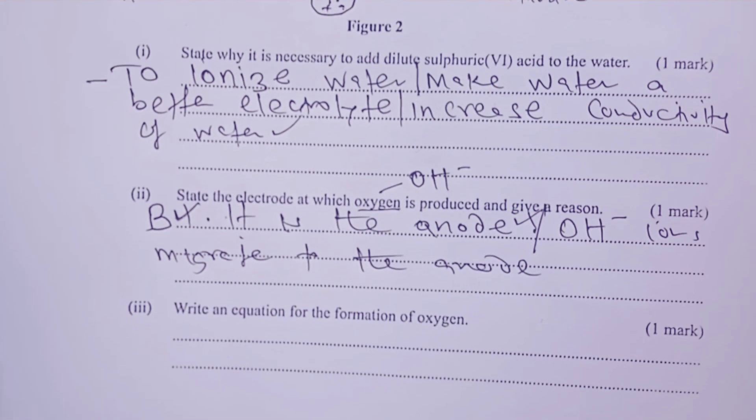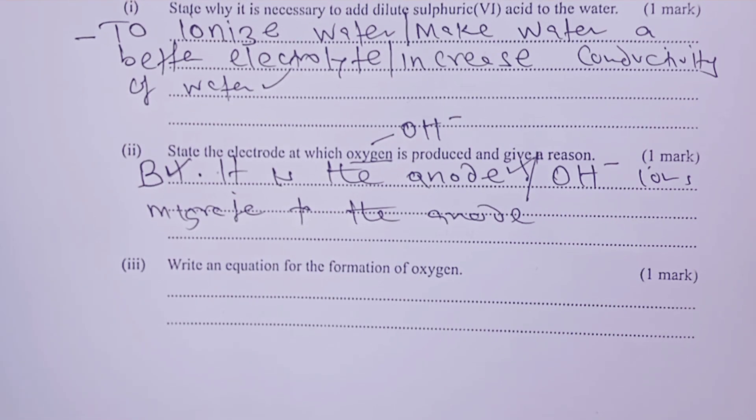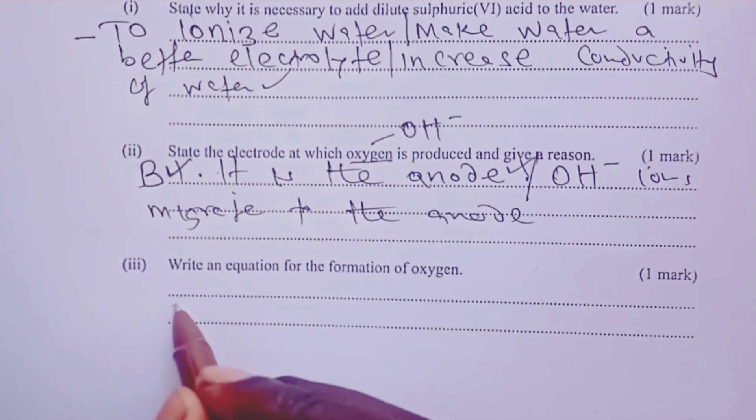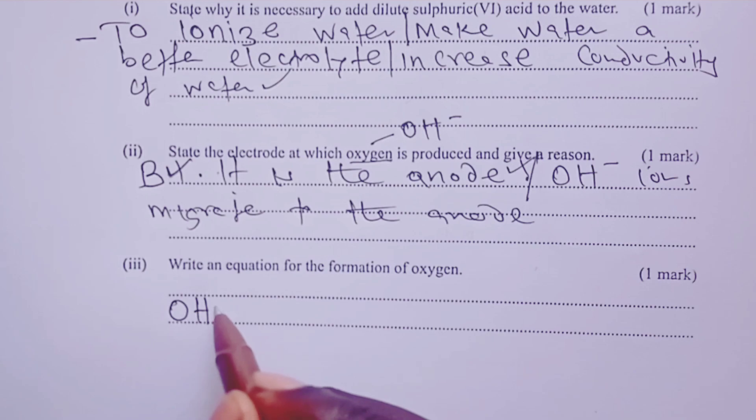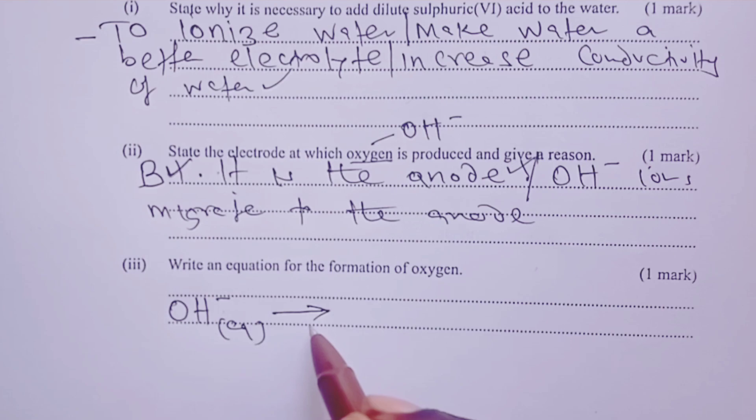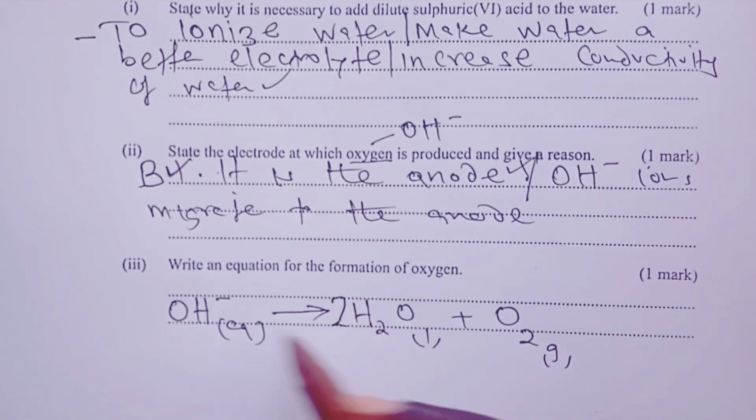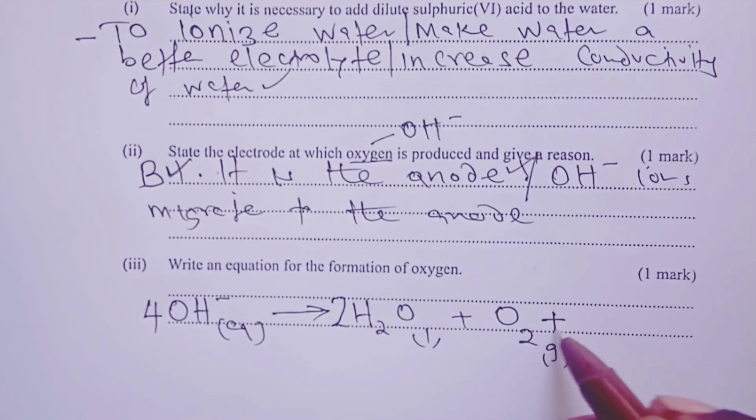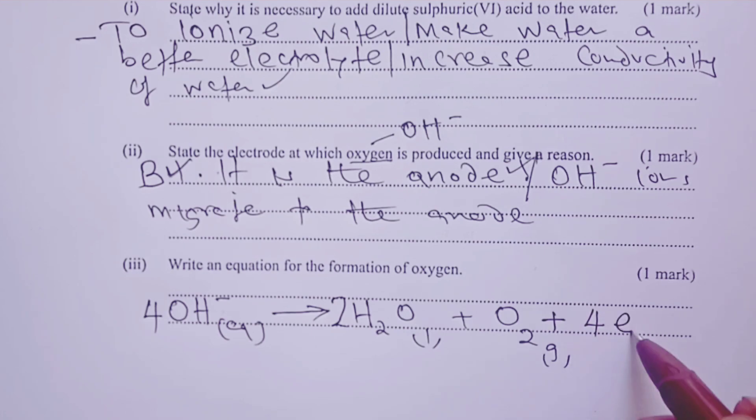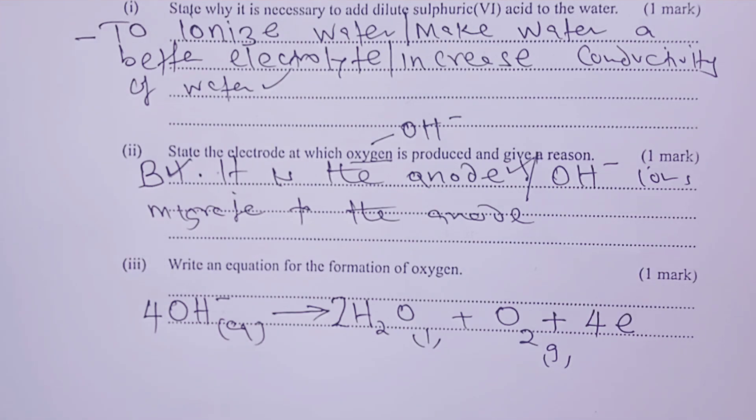Now, to part 3. We are then asked to write the equation that produces oxygen. So here, as we've agreed, oxygen comes as a result of discharge of hydroxyl ions. When you do so, we normally form water and our gas oxygen. Then we balance with a 2 on water and a 4 on hydroxyl ions. That means that this reaction is normally accompanied by 4 moles of electrons for the next mark.